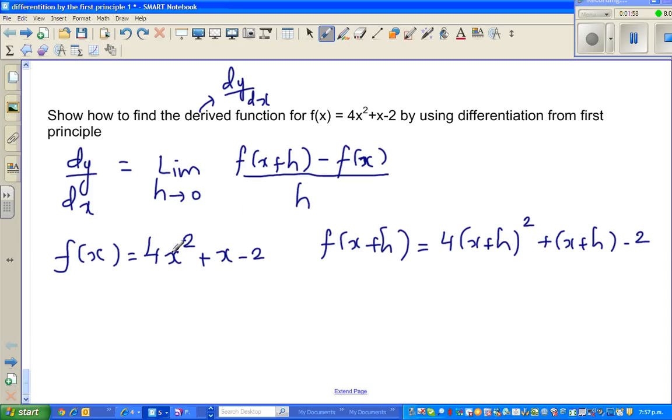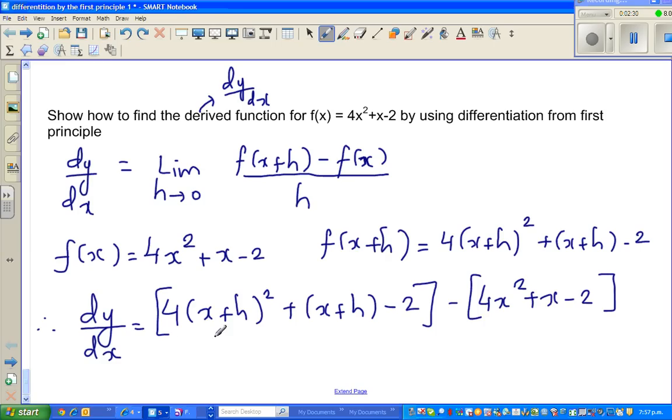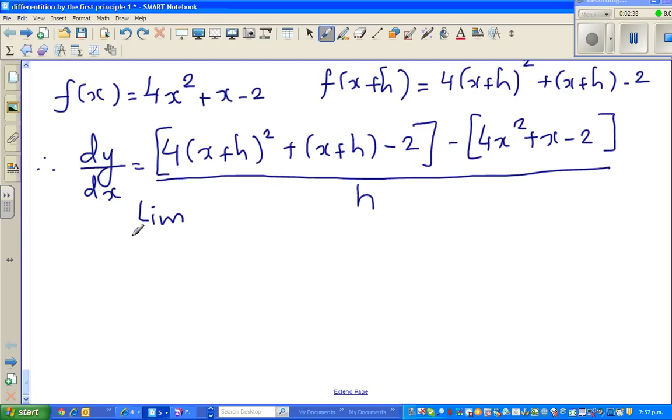So f of x plus h would be - what you are doing is you are going to put x plus h in place of x. So this will change to 4 times x plus h squared plus x plus h minus 2. So let us substitute this in the formula. Therefore dy by dx is the limit when h approaches 0.